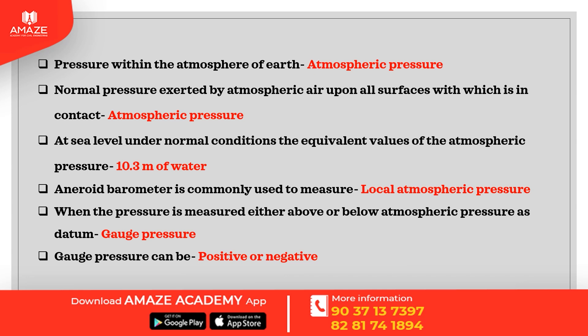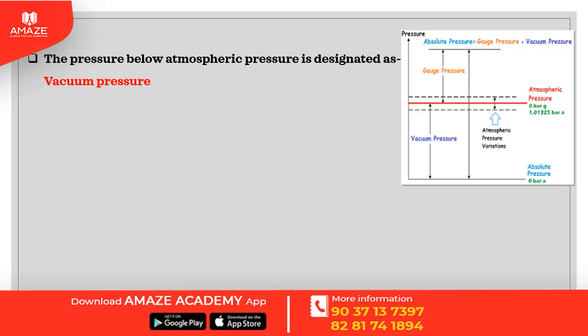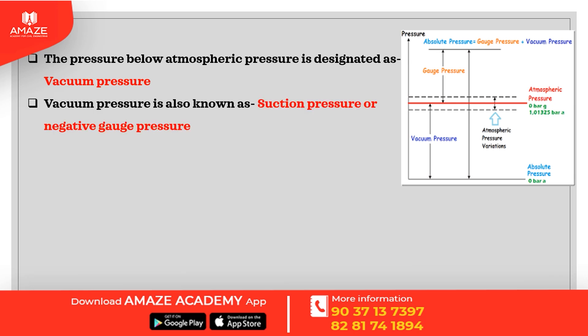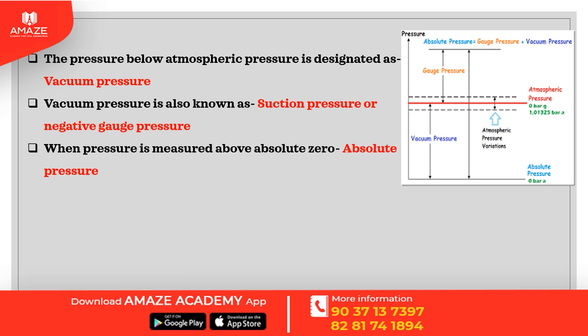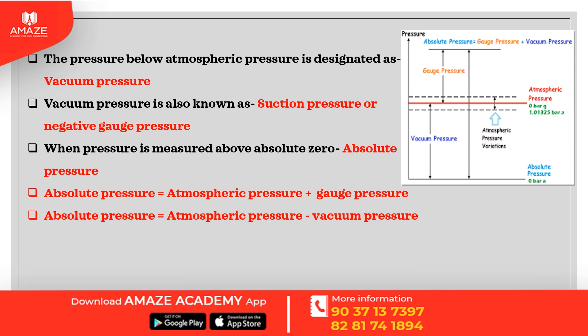Gauge pressure can be positive or negative. The pressure below atmospheric pressure is designated as vacuum pressure. Vacuum pressure is also known as suction pressure or negative gauge pressure. When pressure is measured above absolute zero, it is called absolute pressure. Absolute pressure is equal to atmospheric pressure plus gauge pressure, and absolute pressure is equal to atmospheric pressure minus vacuum pressure.